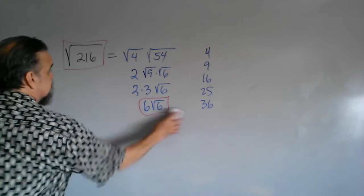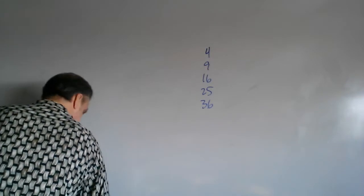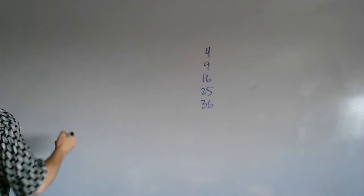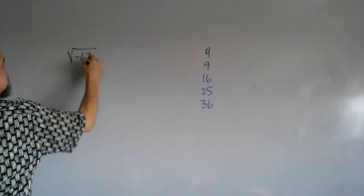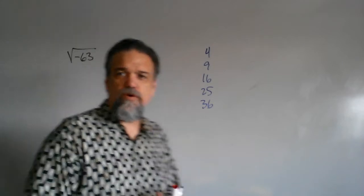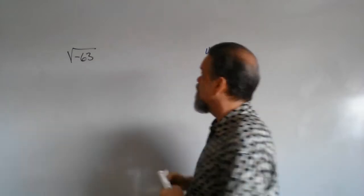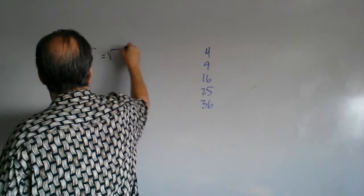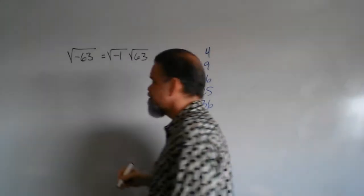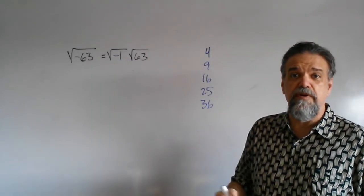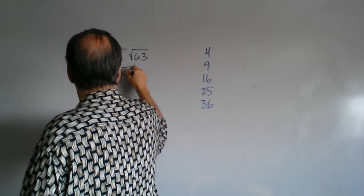Let's see if we can do this one more time. Let's simplify the square root of negative 63. First off, there's a negative there. So this is going to be the square root of negative 1 times the square root of 63. And I know what the square root of negative 1 is — it's i. So this is i times the square root of 63.